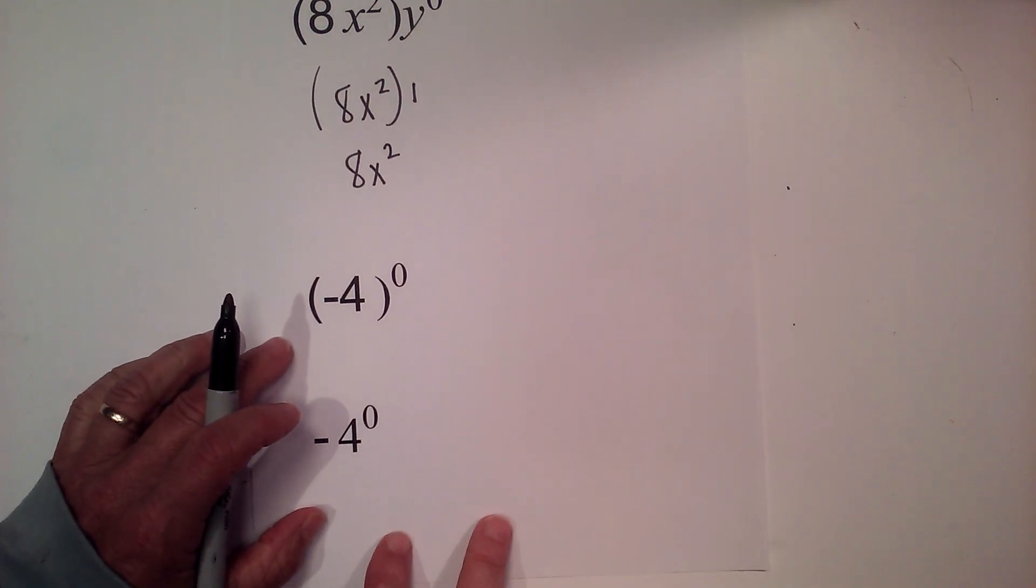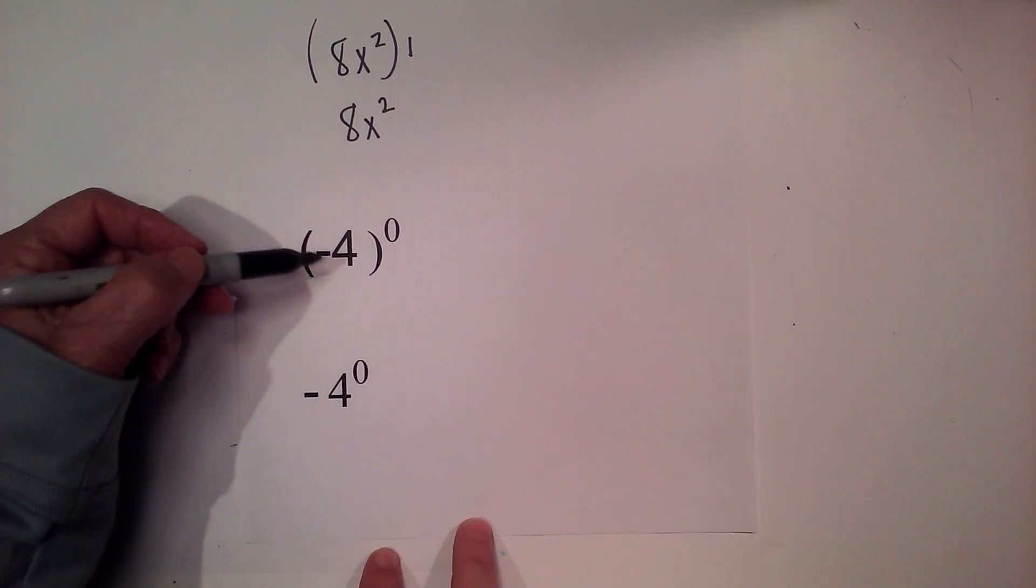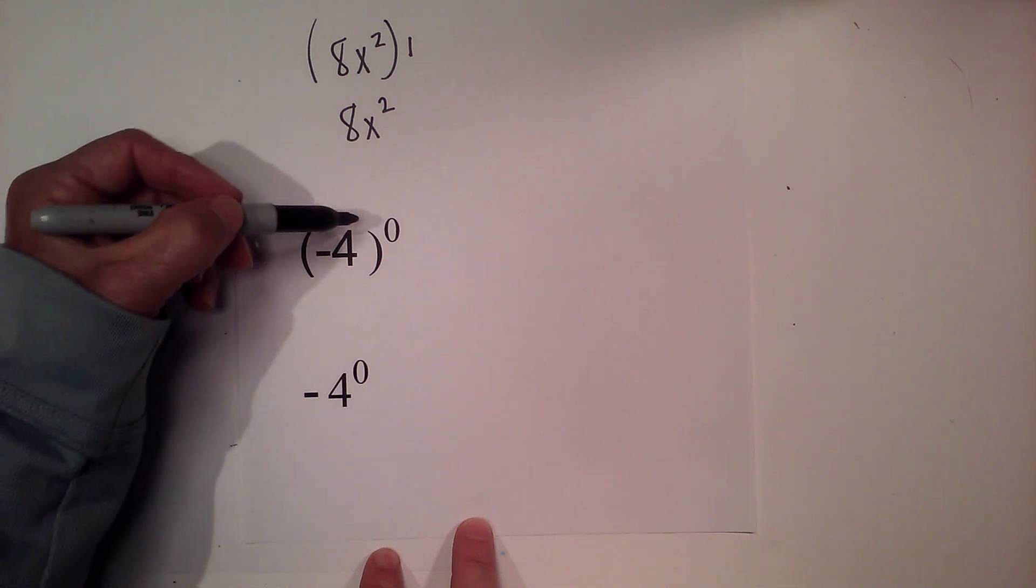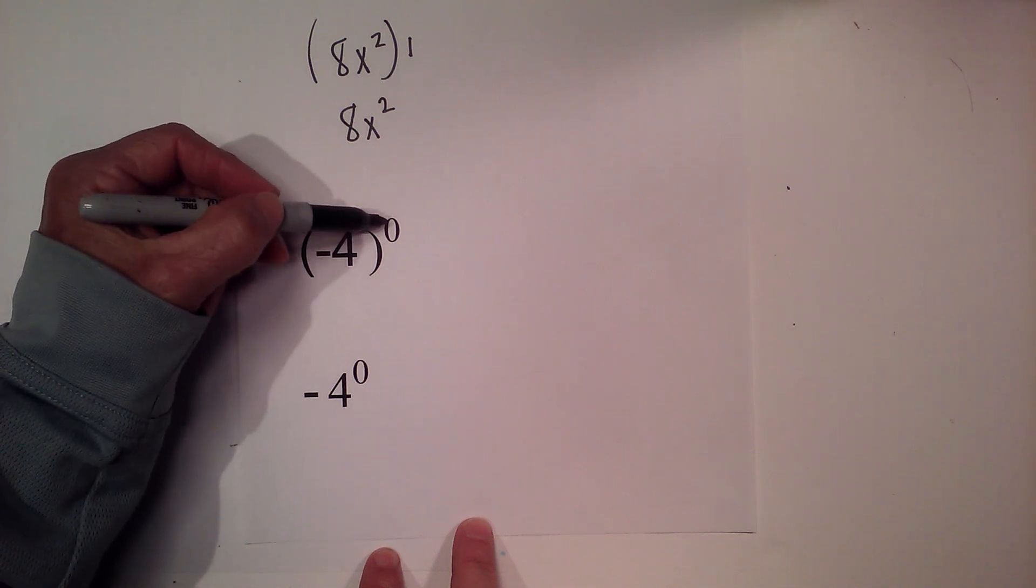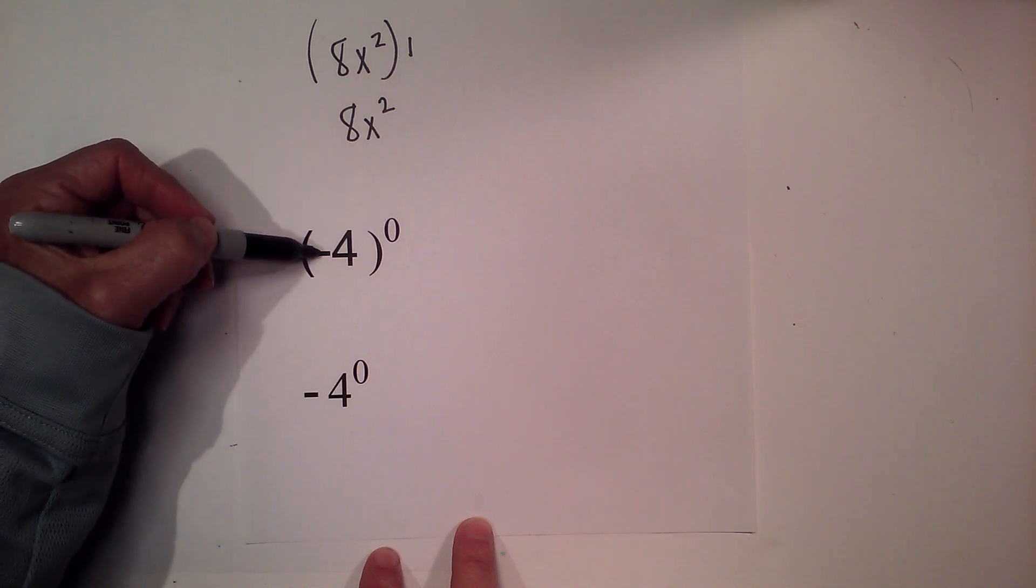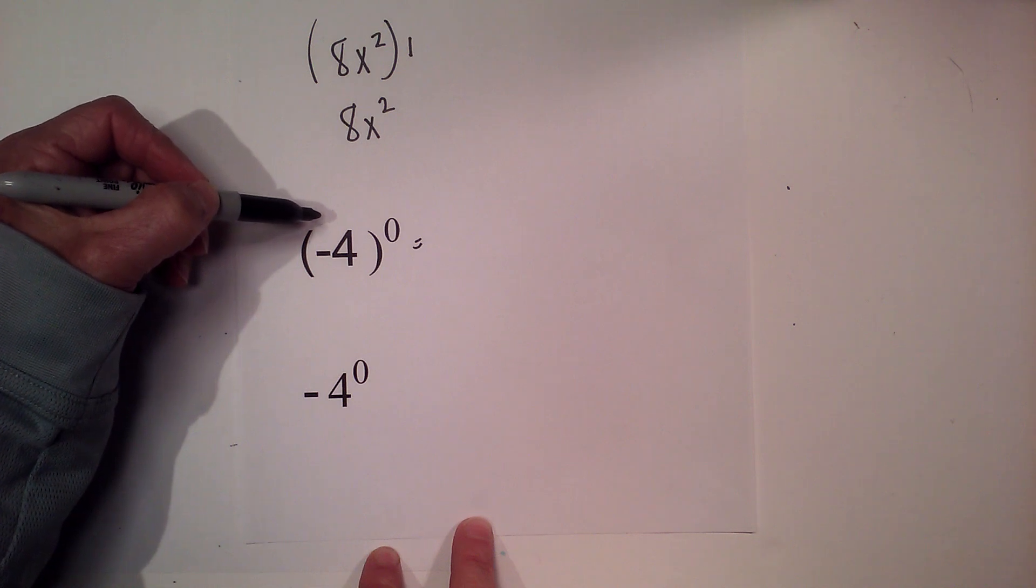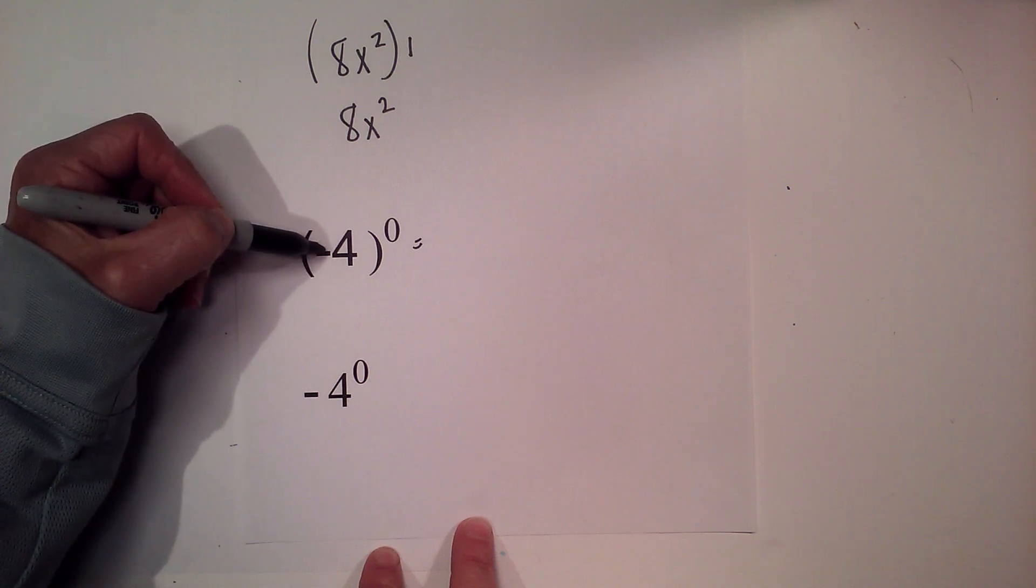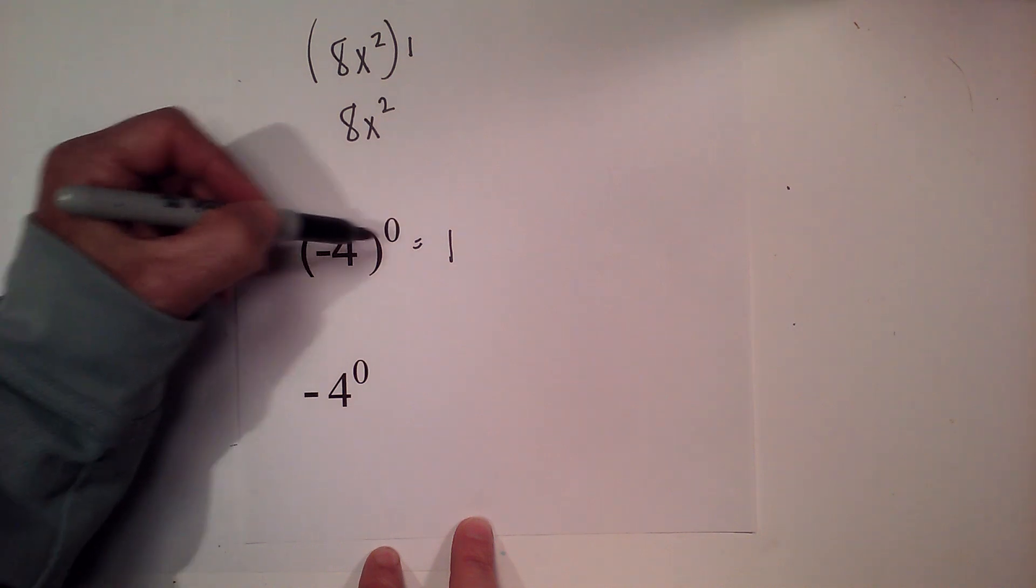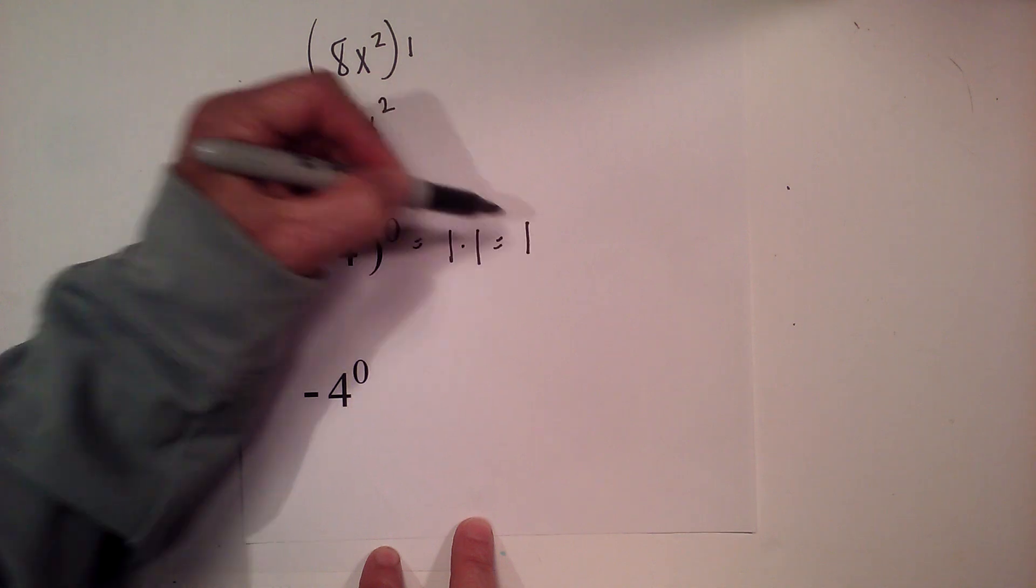Now on these next two you need to be careful so you don't make a mistake. First we have in parentheses negative 4 and zero's on the outside. Since it's on the outside of the parentheses, the zero exponent applies to the sign and the number, so therefore the sign raised to the zero power is 1, and then the 4 raised to the zero power is 1, so it will become 1.